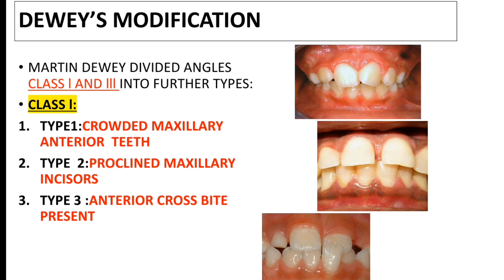Martin Davis is his full name. Martin Davis divided Angle's Class 1 and Class 3 into further types. In Class 1 he introduced five types. Type 1 is crowded maxillary anterior teeth, shown in the first picture. Type 2 is proclined maxillary incisors, shown in the second picture.